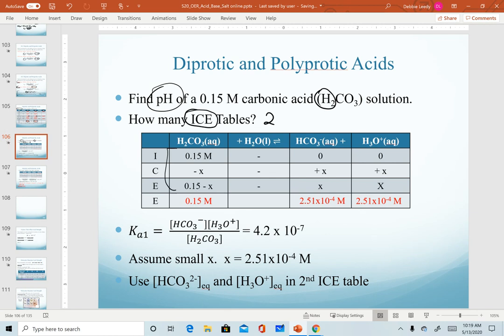So here's our ICE table set up. We have our expression. We assume that x is small, and so when we solve for x, we get this value. So our initial carbonic acid doesn't change at all, but we do have values of hydrogen carbonate and hydronium in here.